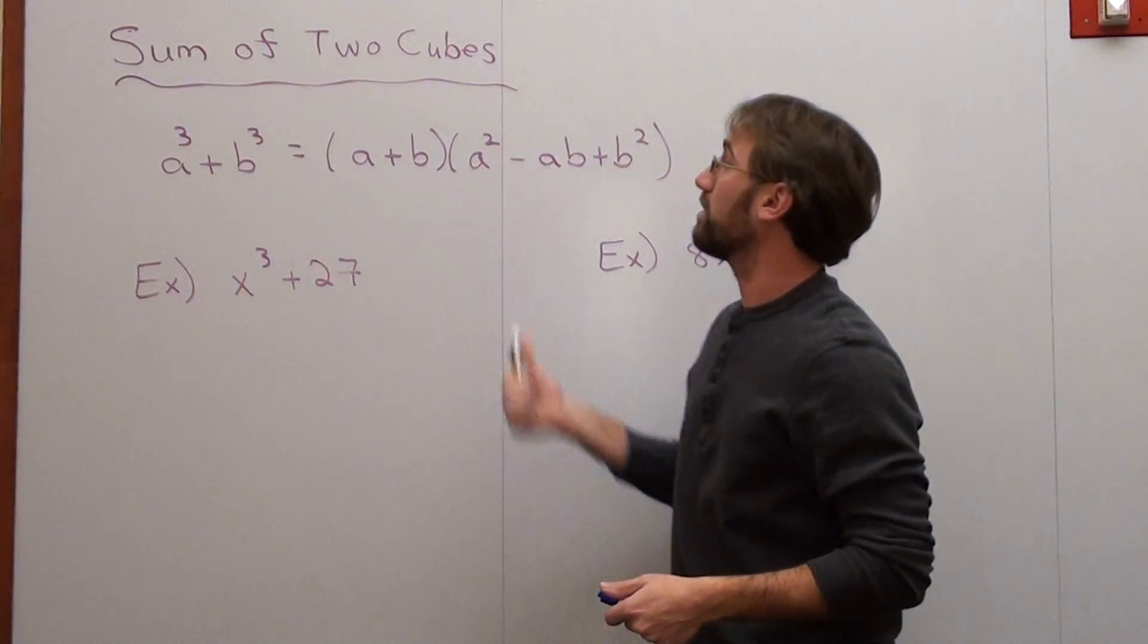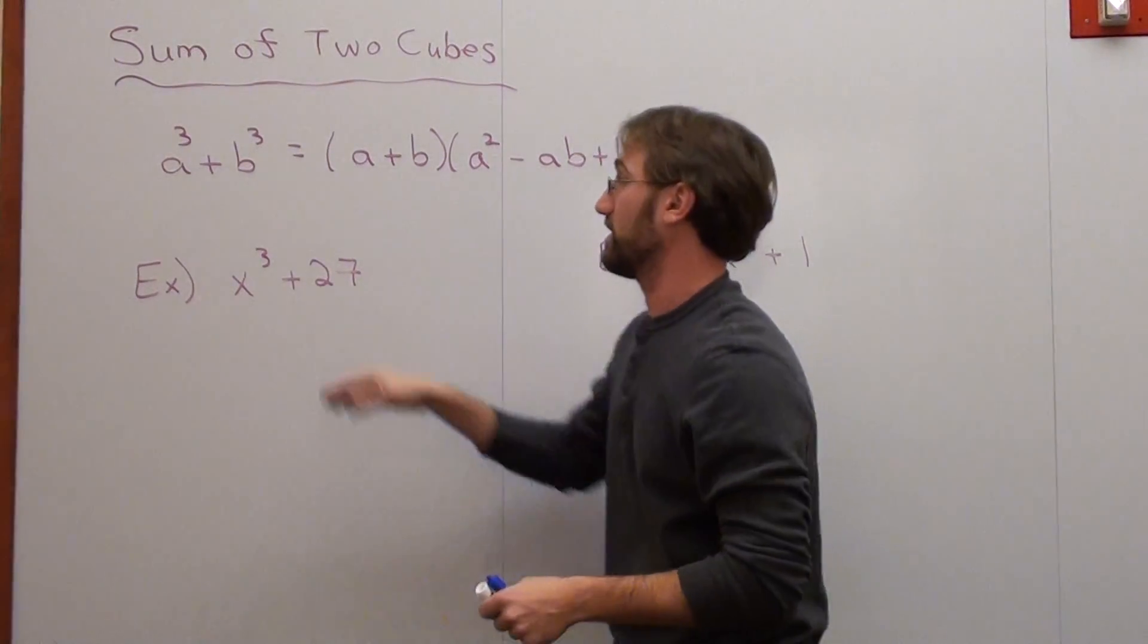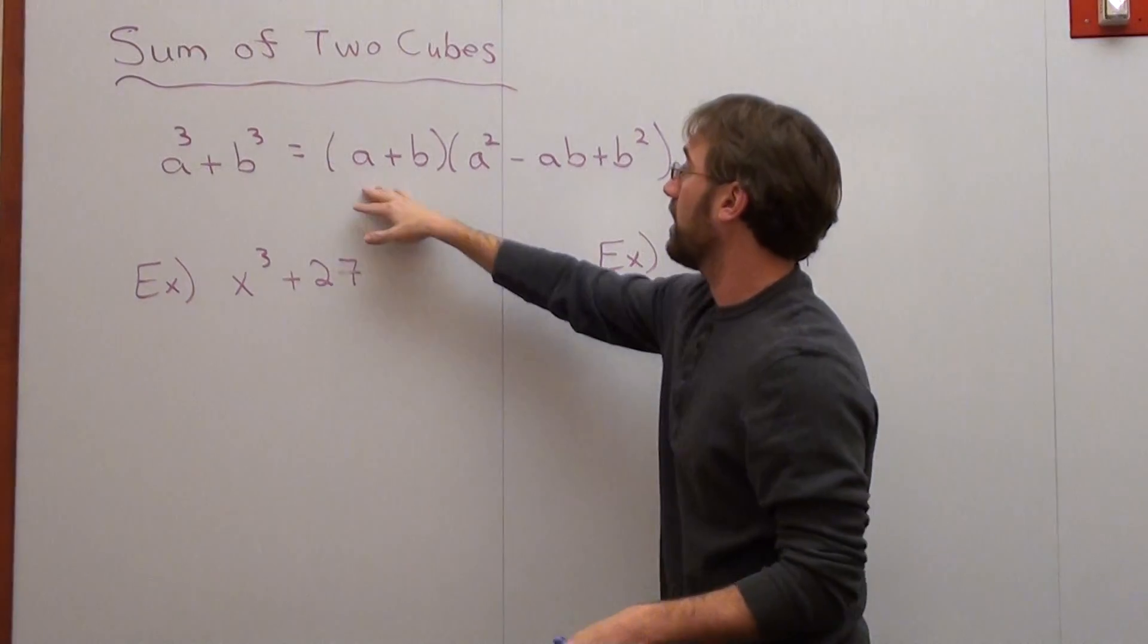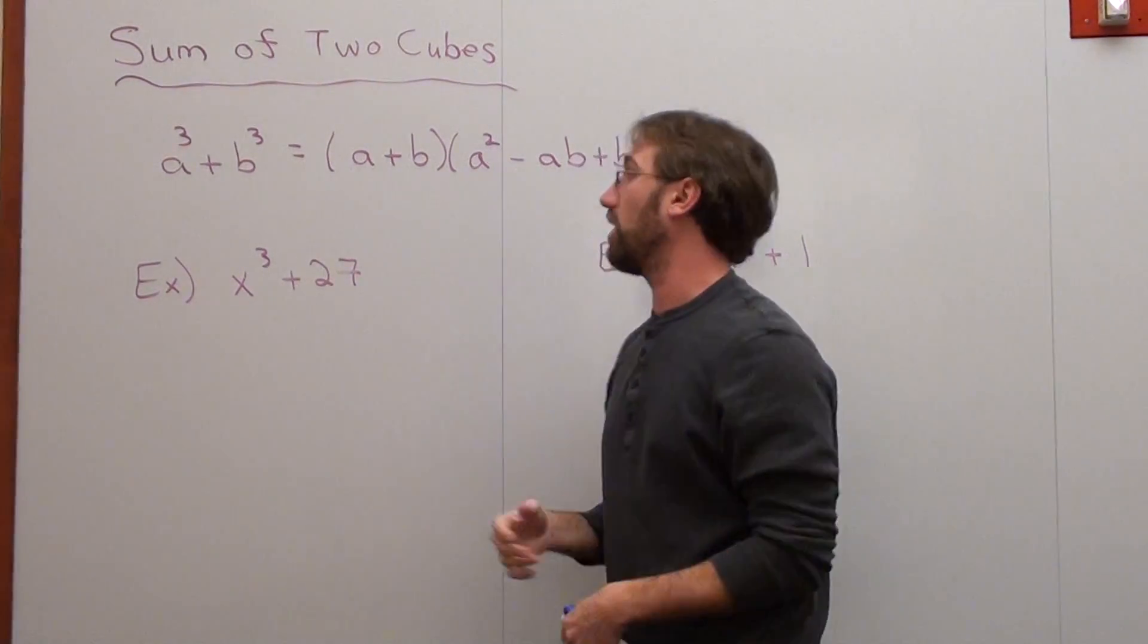Hello again. We're factoring the sum of two cubes, and basically what that is, is like a term cubed plus another term cubed. And there's actually a formula for that, and it looks like this, and I'll just explain it as I go along.